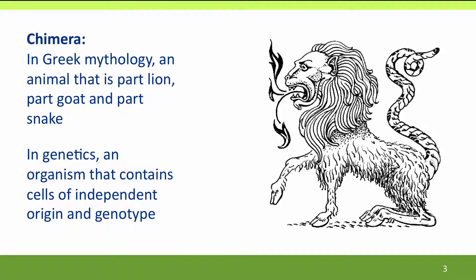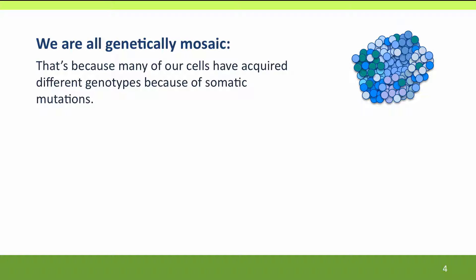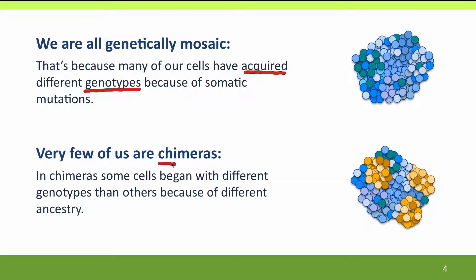The term chimera comes from Greek mythology, where it referred to an animal that was part lion, part goat, and had the tail of a snake. In genetics, it refers to an organism that contains cells of independent origin and thus of independent genotypes. We should distinguish chimeras from mosaics, because we're all genetically mosaic — our cells have different genotypes acquired through somatic mutations. In contrast, very few of us are chimeras, where some cells began with different genotypes because they had different ancestry.